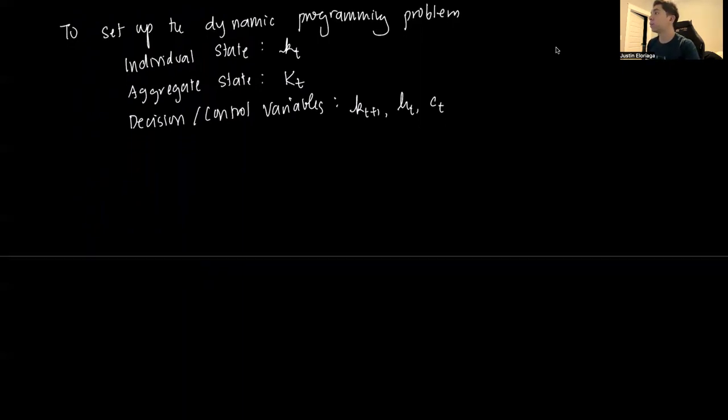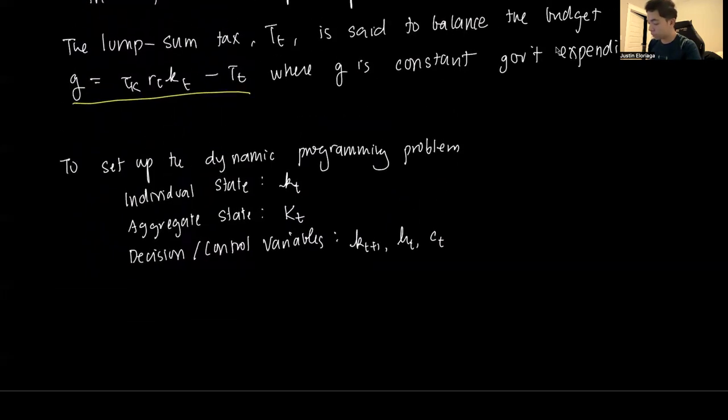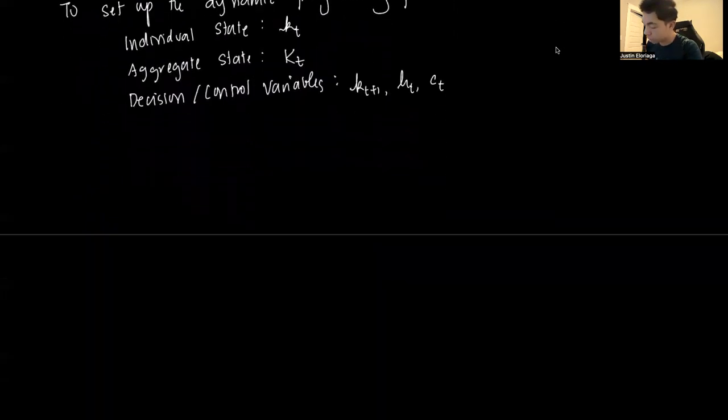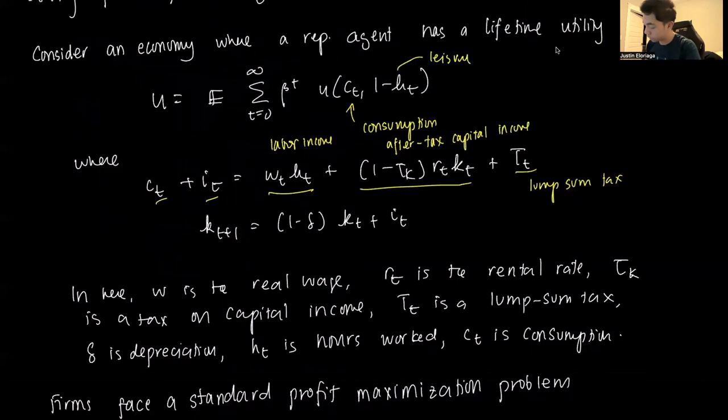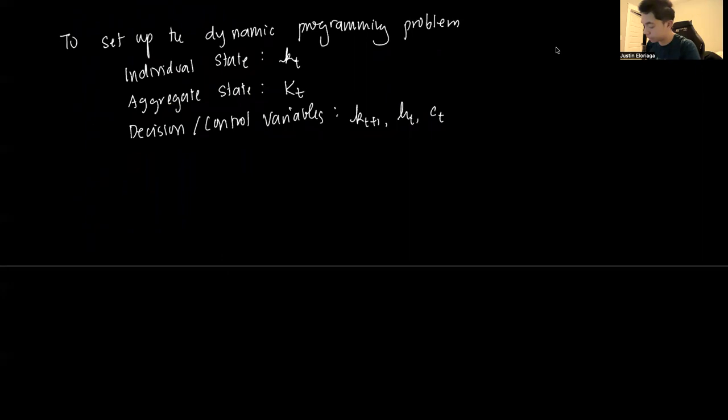So notice, for the consumer, we were given with this equation for Ct. So we have that Ct plus It is equal to Wt Ht plus 1 minus tau K, Rt Kt plus tau T.